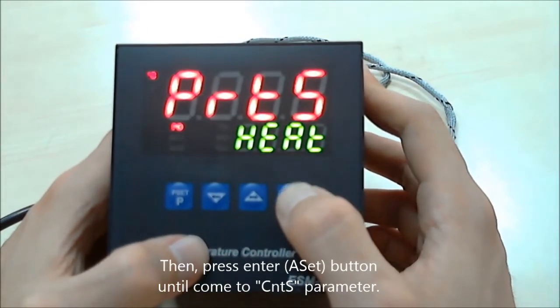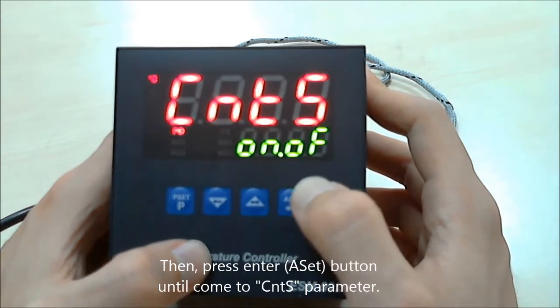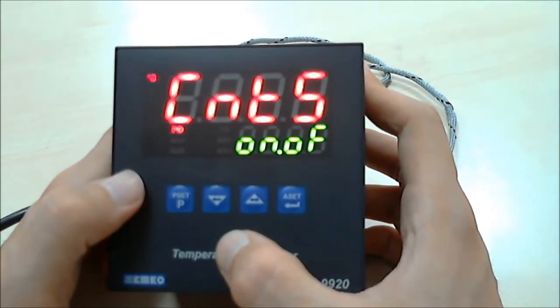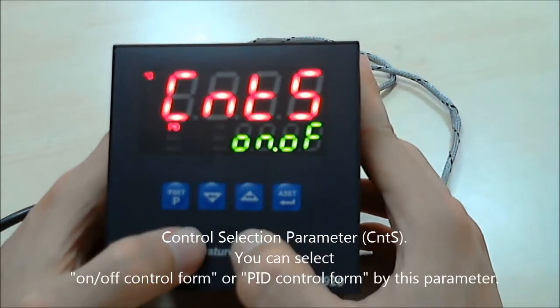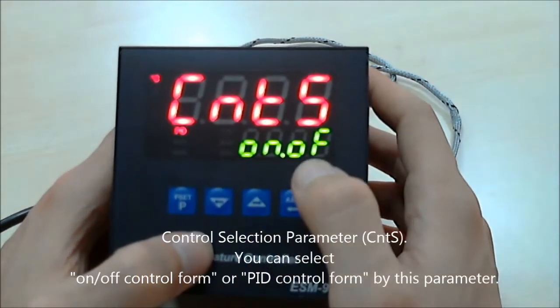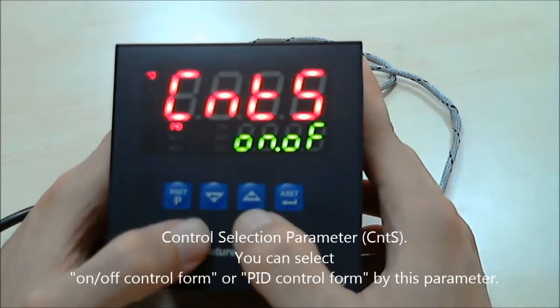Again press enter button, again press enter button, and then you will see control selection parameters. From these parameters, you can select on-off control or PID control.